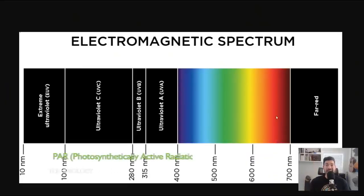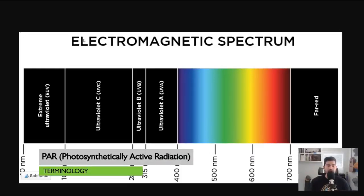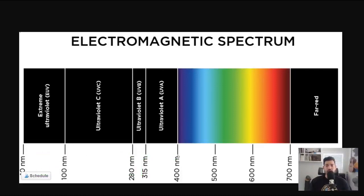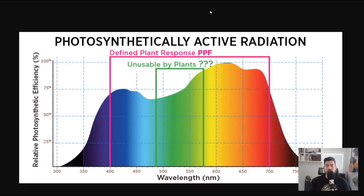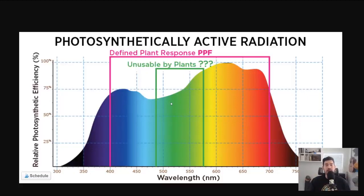The first piece of terminology is PAR, or photosynthetically active radiation. On screen you can see the electromagnetic spectrum — 400 to 700 nanometers is the wavelength range of light that plants tend to use most. It is actually untrue that the green spectrum is unusable by plants; plants do use light in the green spectrum. Basically, PAR is not a measurement of the amount of light — rather, it's a determination of the quality of that light: is it within the photosynthetically active range? You don't want to be shining wavelengths of light on a plant that they're not going to use.